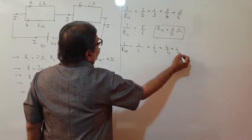Each parallel pair now becomes a single equivalent resistance. The simplified circuit has R12 = 4/5 ohm, R34 = 6/5 ohm, and R56 = 15/4 ohm, all in series between 46 volt and 0 volt.